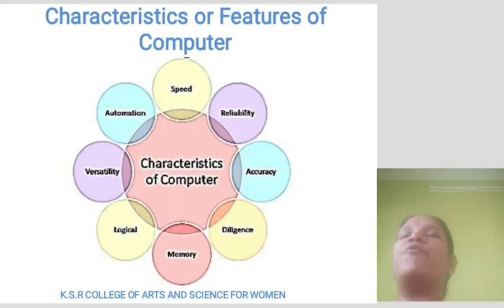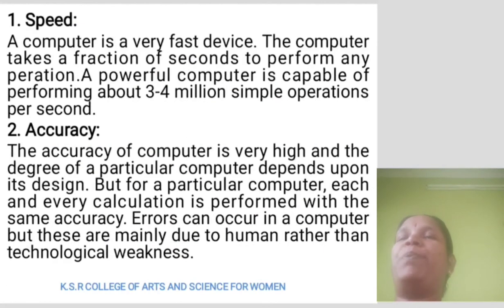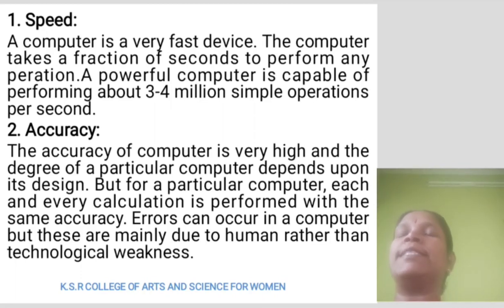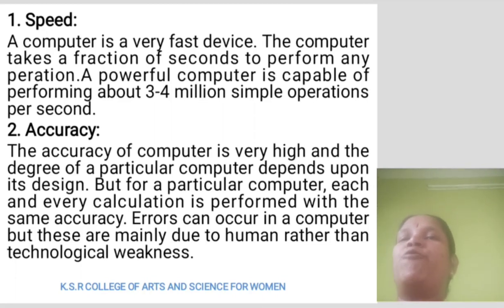Characteristics or Features of Computer. Speed: A computer is a very fast device. The computer takes a fraction of a second to perform any operation. A powerful computer is capable of performing about 3 to 4 million simple operations per second. Accuracy: The accuracy of a computer is very high and the degree depends upon its design. Each and every calculation is performed with the same accuracy.